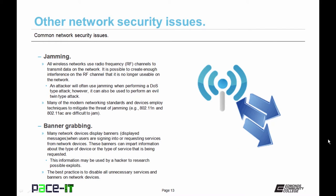Then there's jamming. All wireless networks use radio frequency channels to transmit data. It is possible to create enough interference on the RF channel that it is no longer usable. An attacker will often use jamming when performing a denial of service type attack, but it can also be used to perform an evil twin type attack. By jamming the legitimate channel, the attacker hopes users will switch to the channel that a rogue access point is transmitting on. Many modern networking standards, such as 802.11n and 802.11ac, employ techniques to mitigate the threat of jamming.